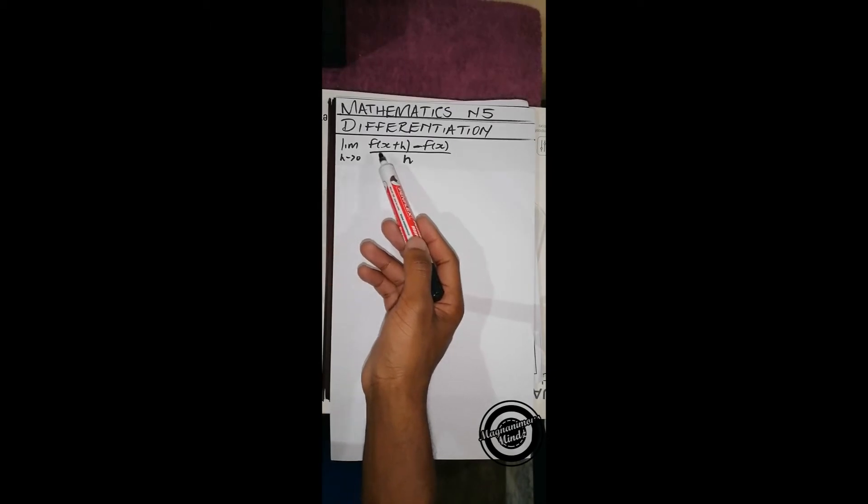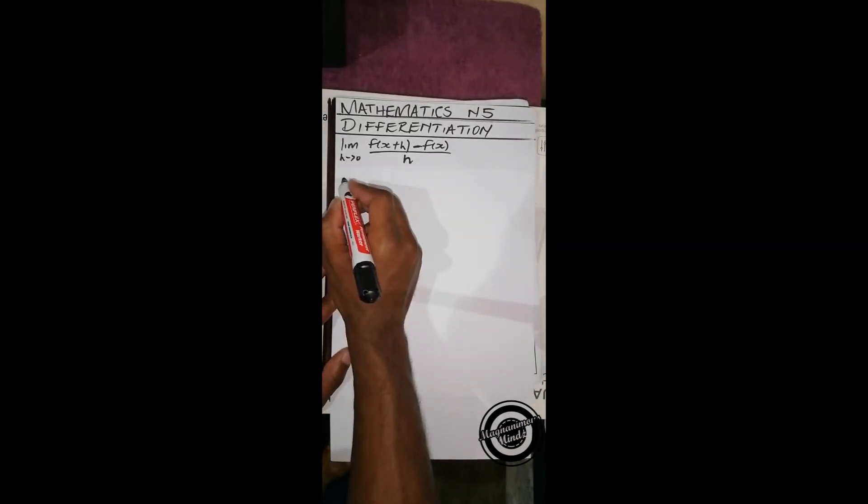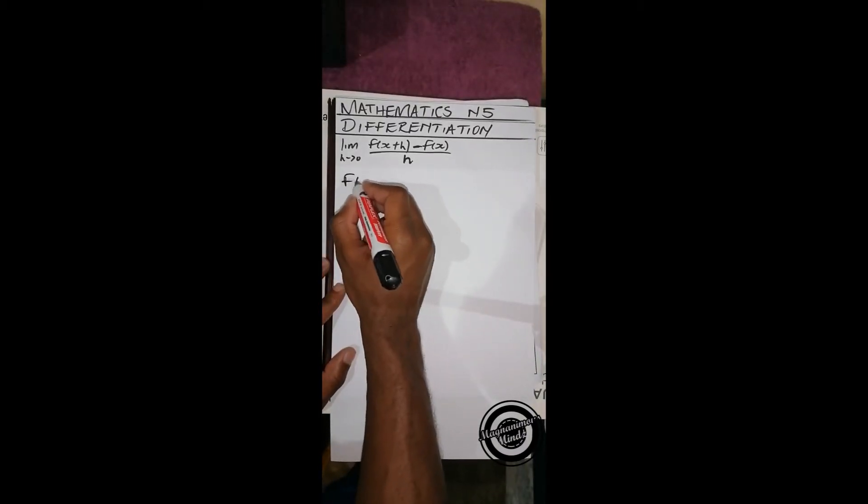Greetings, this is Magnanimous Minds Lectures Online. Today we continue with Mathematics and Five Differentiation, and we'll be doing differentiation using the first principle, which says: limit h approaching zero of f(x+h) minus f(x) over h. That's the formula, and this formula differentiates a given function of x. Let's see an example.